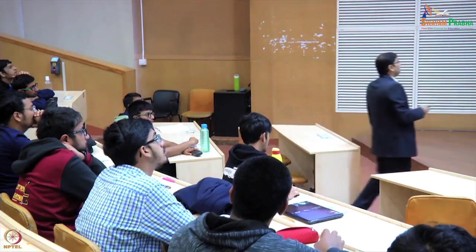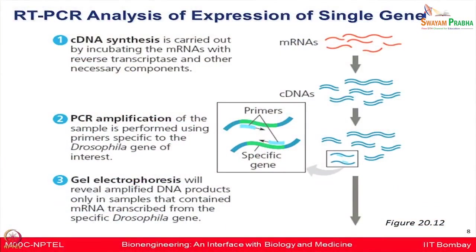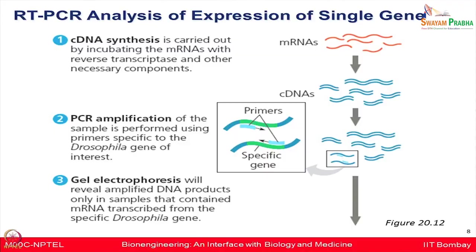This is a little complex but let us go through it. You have an mRNA population in the cell; that mRNA can be converted into complementary DNAs (cDNA). From these cDNAs you can do PCR amplification for the gene of interest, and then resolve on a gel to confirm the band corresponds to the right gene. This involves 3 major steps: first, cDNA synthesis; second, PCR amplification; and third, gel electrophoresis.